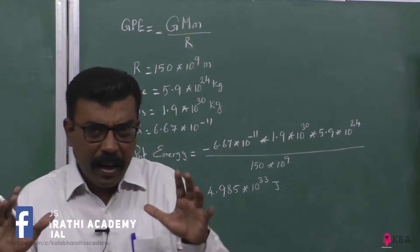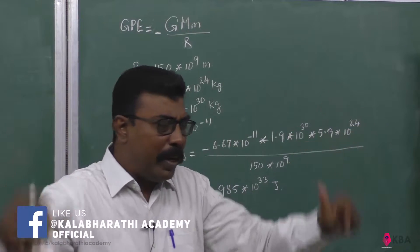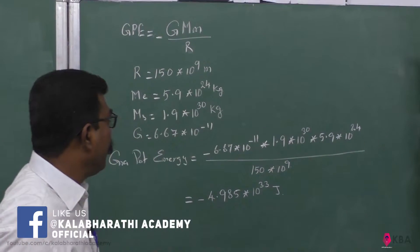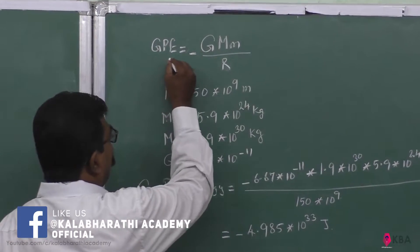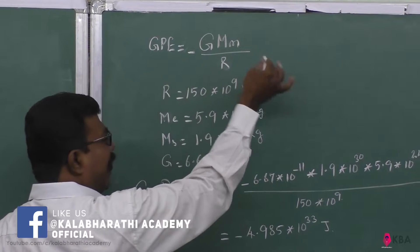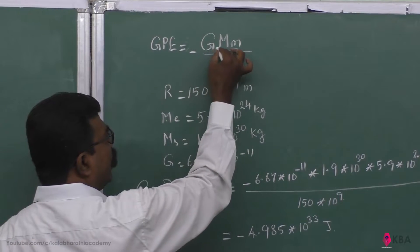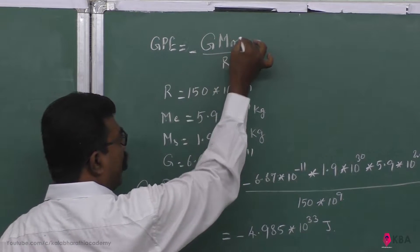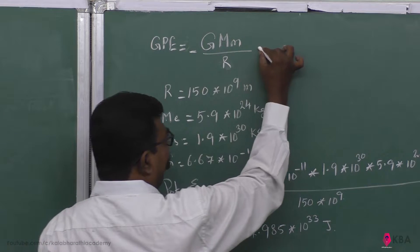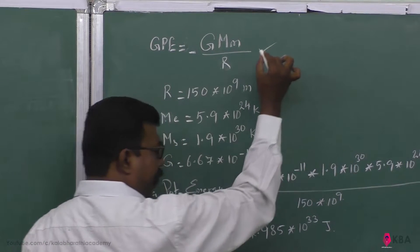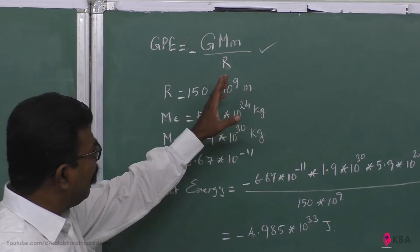The gravitational potential energy between any two masses is given by: minus G times m₁ times m₂ divided by r. This is the simple derivation.